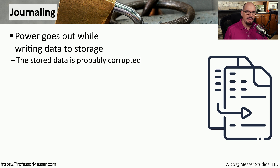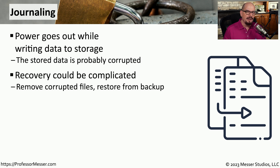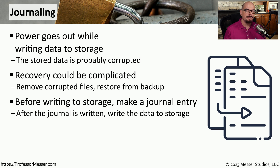A concern for many IT professionals is losing power while writing information to a drive. This means some data will be written to the drive and other data will be lost, potentially leaving a database in a format that can no longer be used by the application. If you find yourself with corrupted data after a power outage, you'll need to remove that corrupted data and restore everything from backup — which is time consuming and could represent a financial loss. To avoid this corruption, you may want to implement some type of journaling, available through some applications or through options in the operating system or file system.